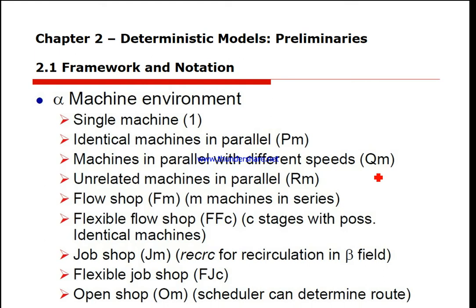In the job shop, every job has its own predetermined route to follow. There is also recirculation — for example, a job could go to A, B, C, D, then back to B and finish. We also have the flexible job shop, which is a generalization of the job shop and the parallel machine environment. Here, if we have m machines, we have c work centers with a number of identical machines at each one.